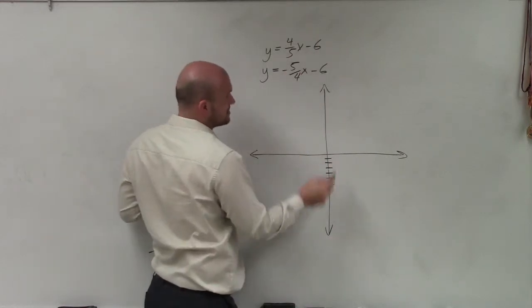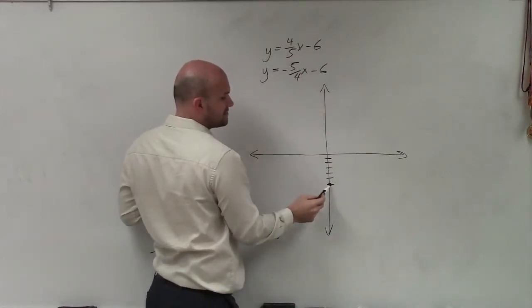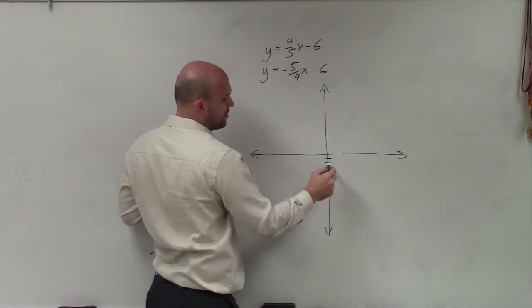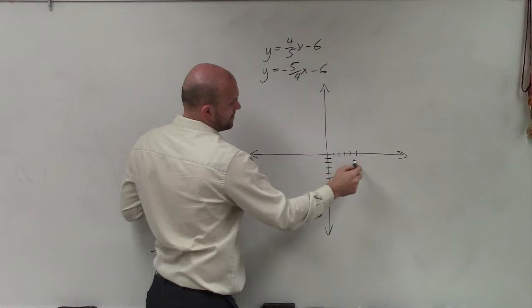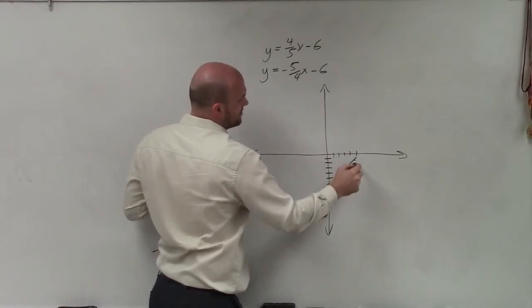So we have four-fifths—that's the slope. From my y-intercept, I'm going to go up four: one, two, three, four, and over five: one, two, three, four, five. Okay? So that's going to be the first equation.